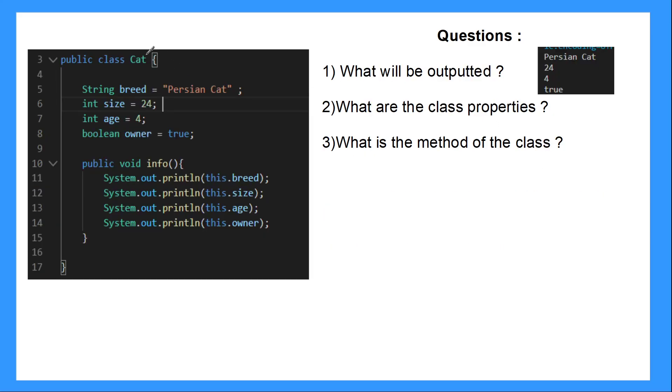Okay, so in the next slide, here we go. This is the code here. So what will be outputted? So if we look here, the breed, this one, this will just output this one because we explicitly set the value here. This will output 24. This will output 4. And this will output true.